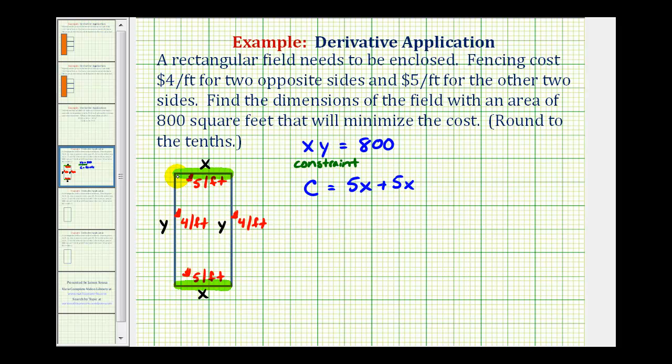Then the remaining two sides are going to cost $4 per foot. So the cost of one length is going to be y feet times $4 per foot, which would be 4y for this length, and also 4y for this length. So we have plus 4y plus 4y. Our cost function is going to be equal to 10x plus 8y.